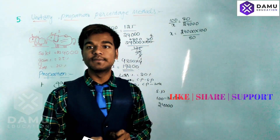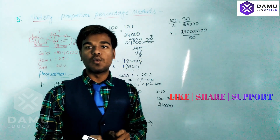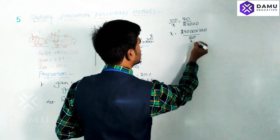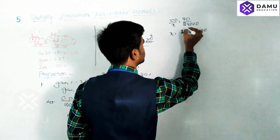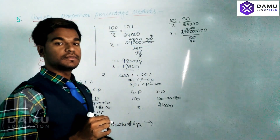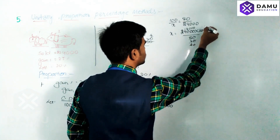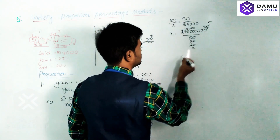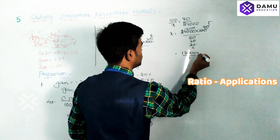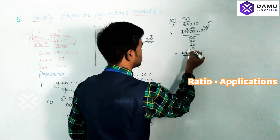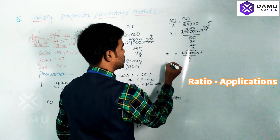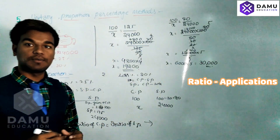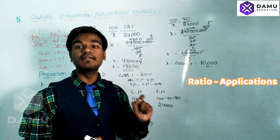Solving for X: 24,000 × 100 ÷ 80 gives us X equals 30,000 rupees. So the cost price of the second block is 30,000 rupees when selling it at 24,000 rupees results in a 20% loss.